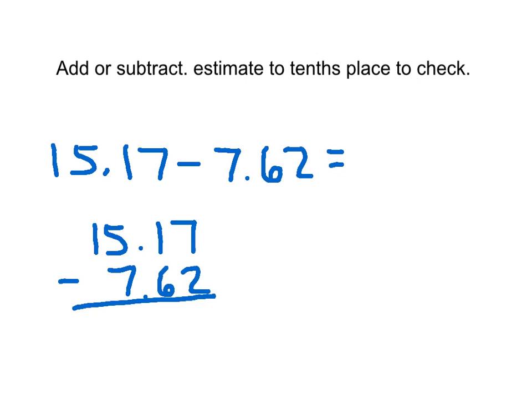So my exact answer: 7 minus 2 is 5. 1 minus 6 can't do it, 5 becomes a 4, 11 there, 11 minus 6 is 5. 4 minus 7 can't do it, the 1 becomes a 0, 4 becomes 14, 14 minus 7 is 7, and my decimal point comes straight down.